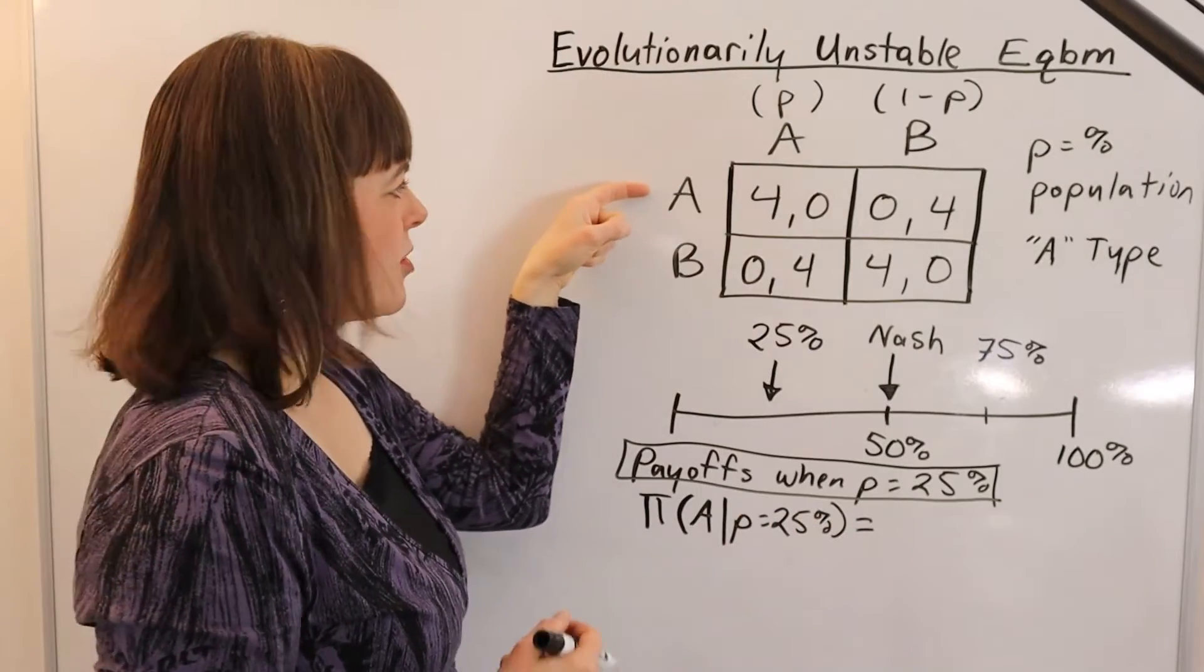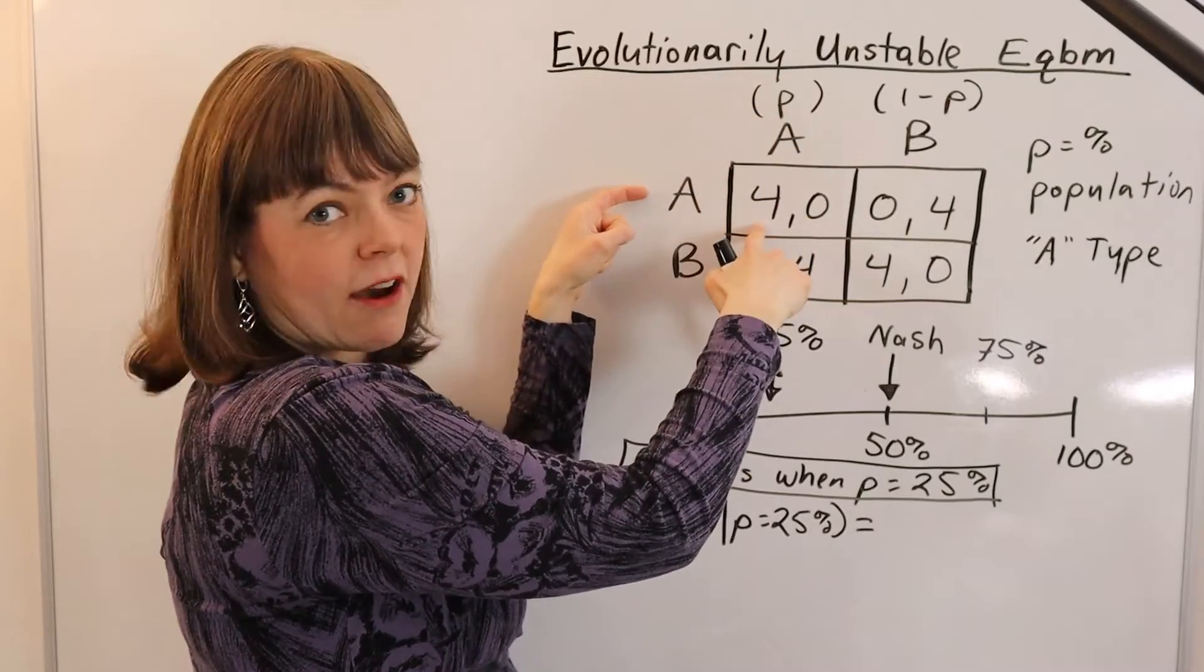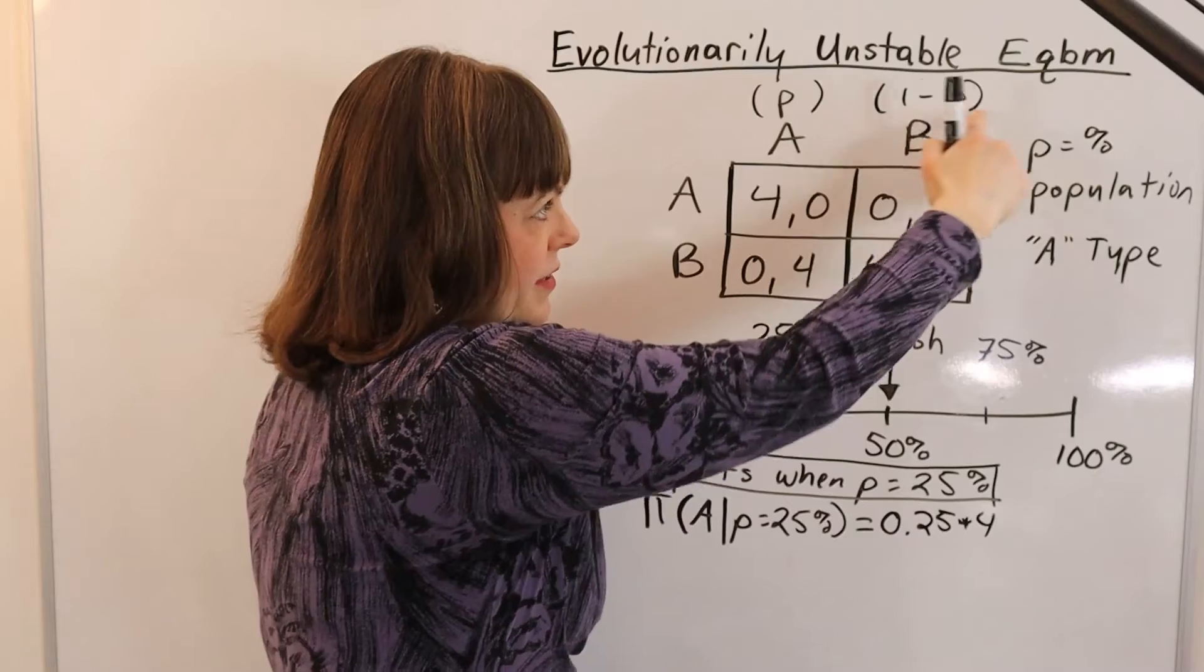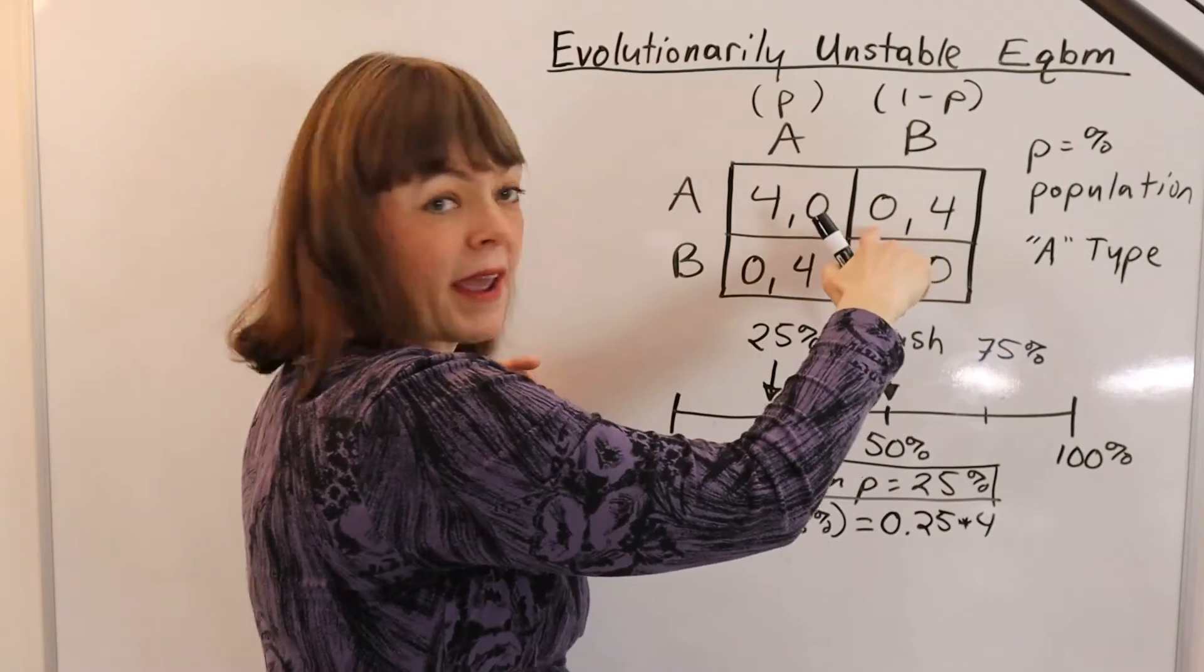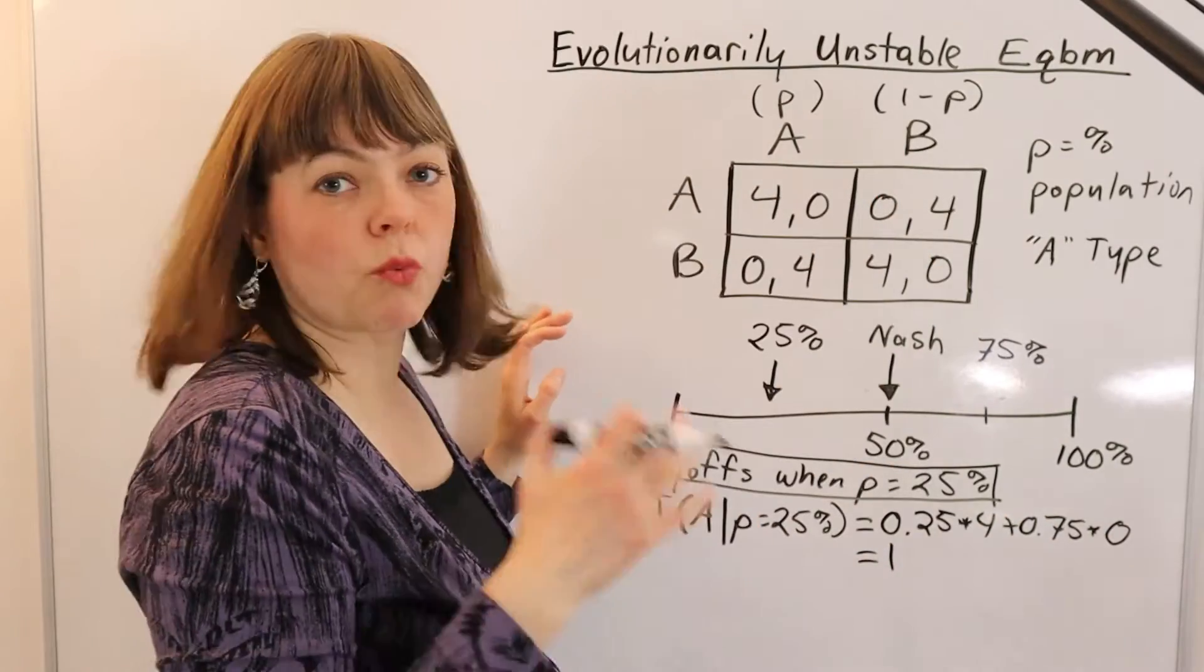So if you're an A type, your payoff is going to be the probability of encountering another A times the payoff if you encounter another A, plus the probability that you encounter a B type, that's 75% here, times your payoff if you encounter a B type. So that's an expected payoff of 1.